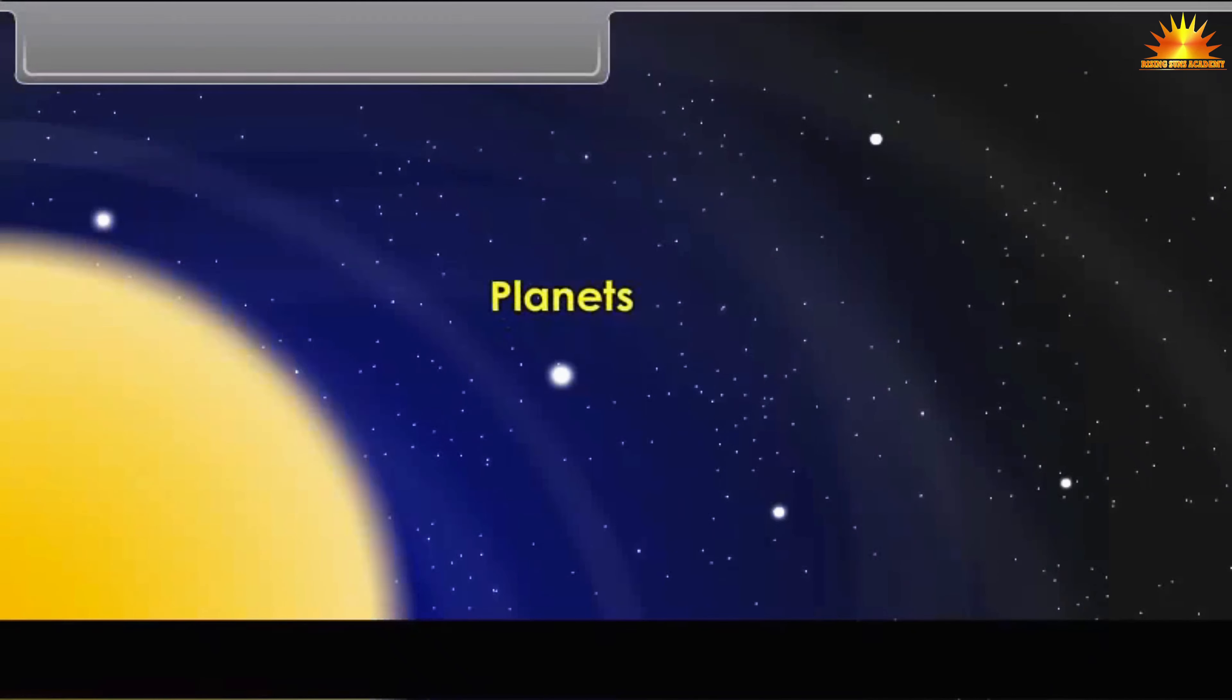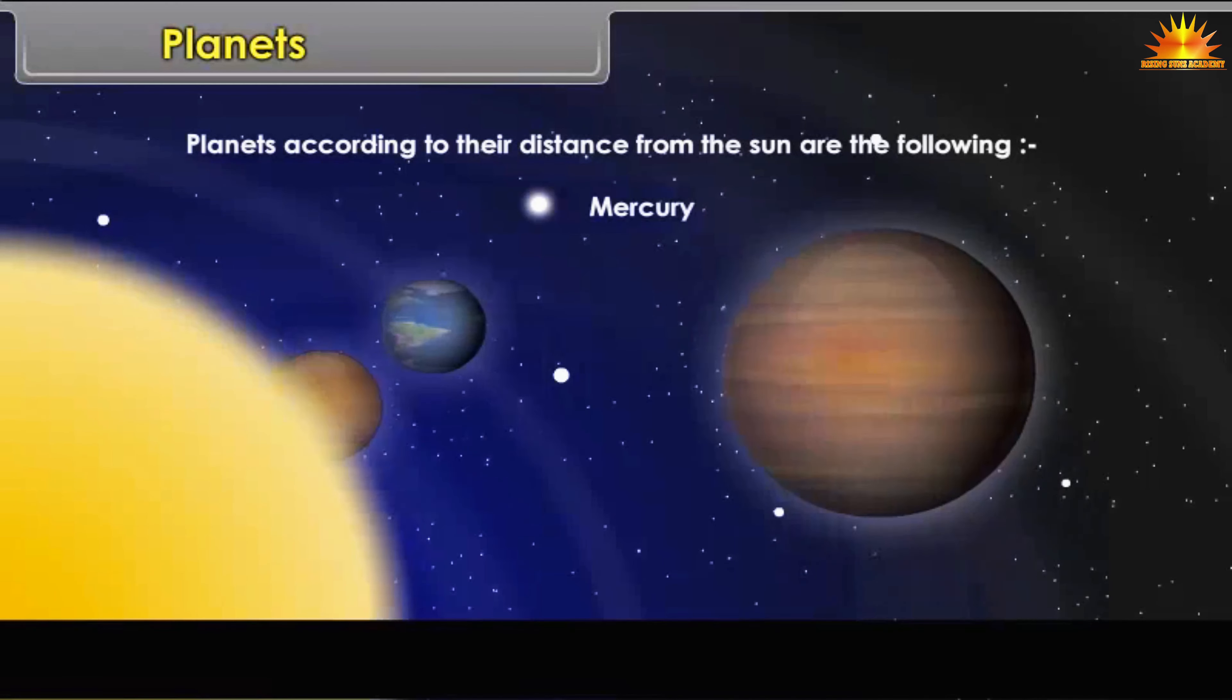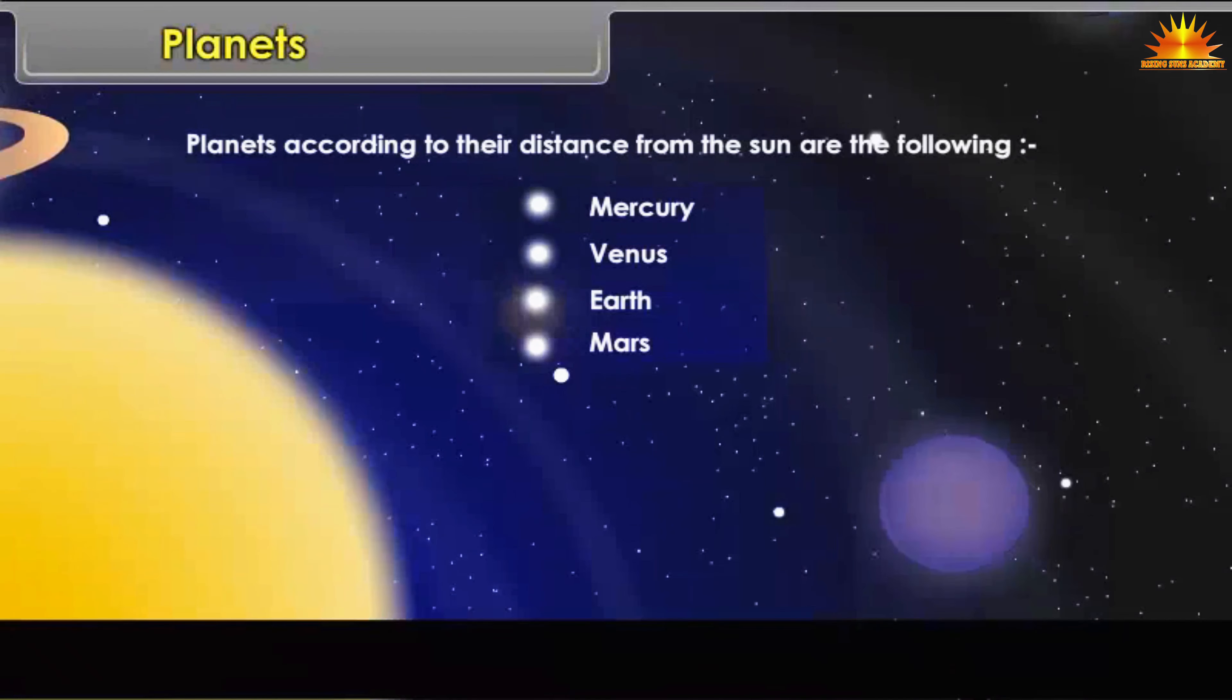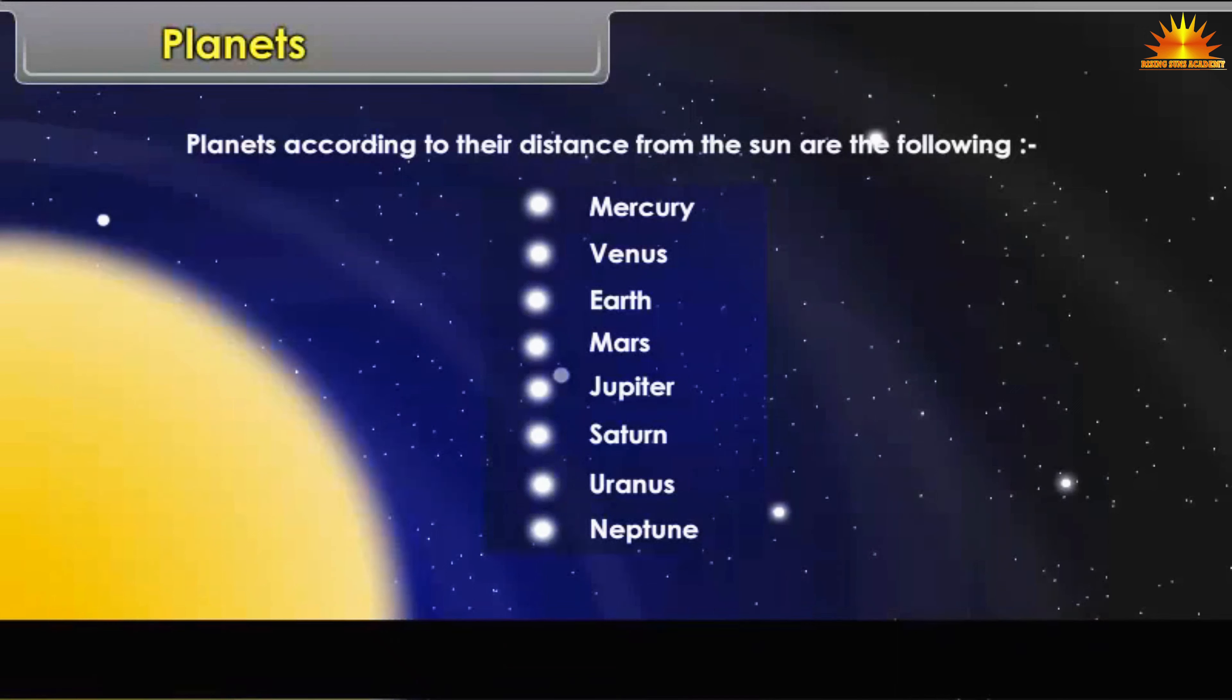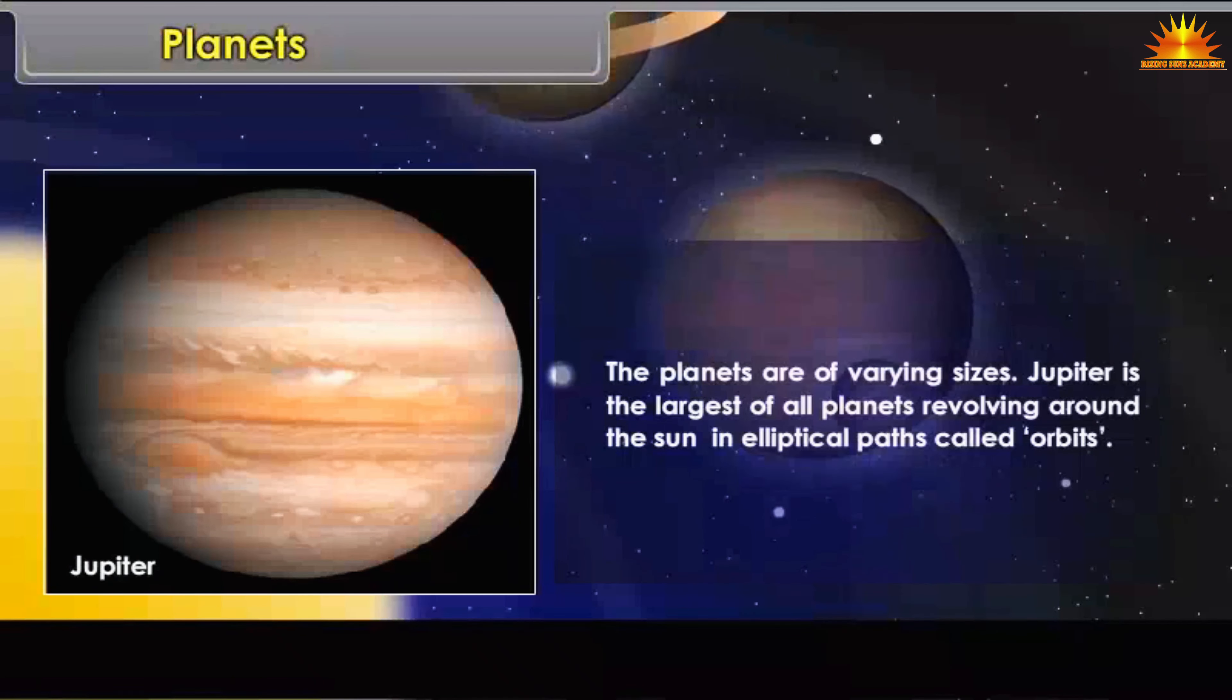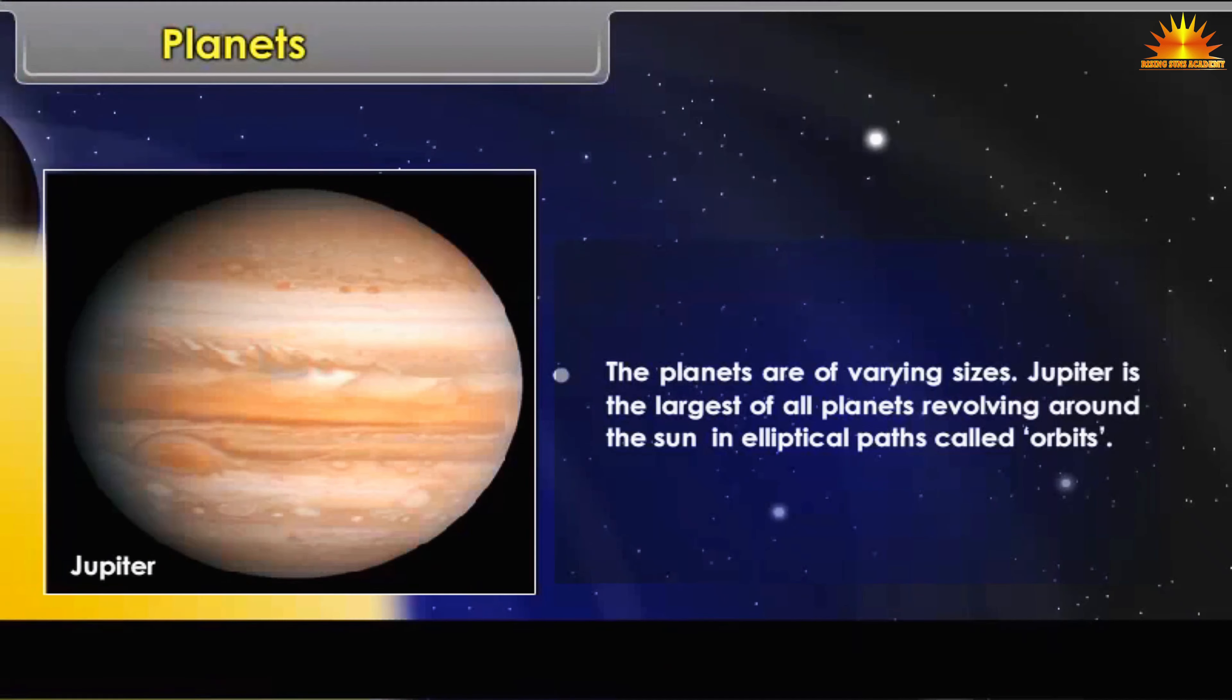Planets: Planets according to their distance from the sun are the following: Mercury, Venus, Earth, Mars, Jupiter, Saturn, Uranus, Neptune. The planets are of varying sizes. Jupiter is the largest of all planets revolving around the sun in elliptical paths called orbits.